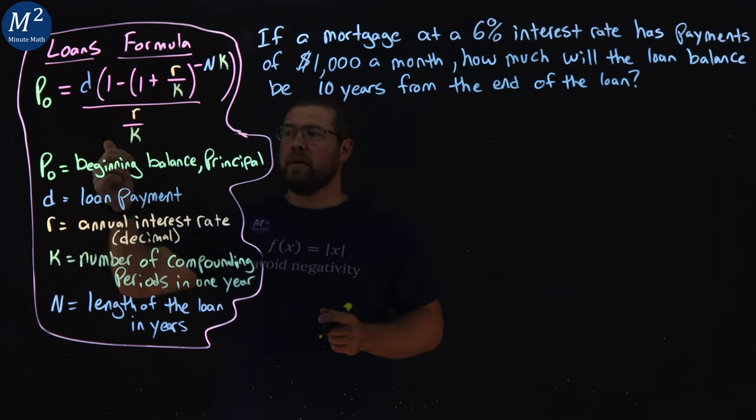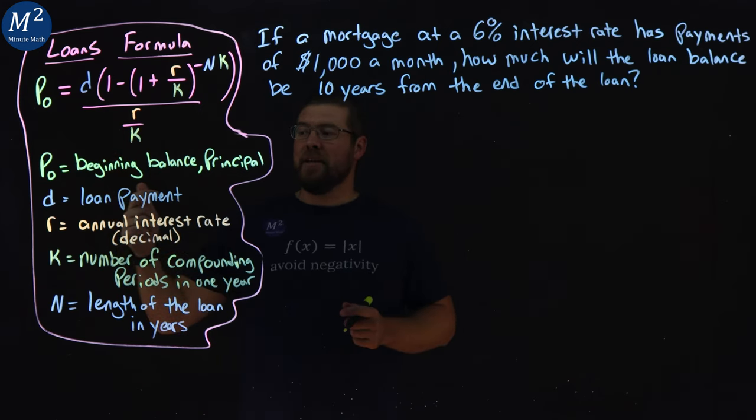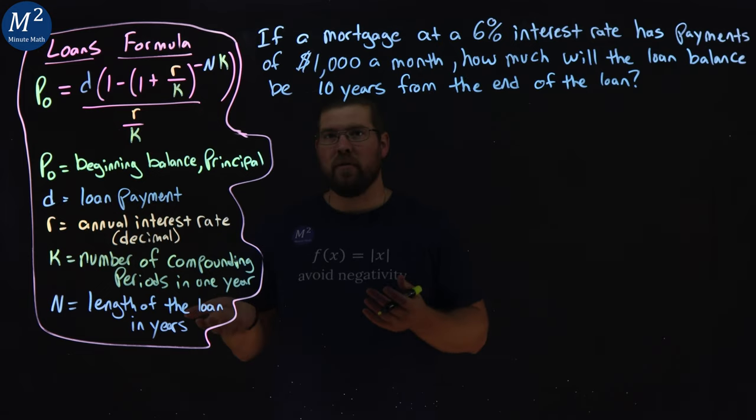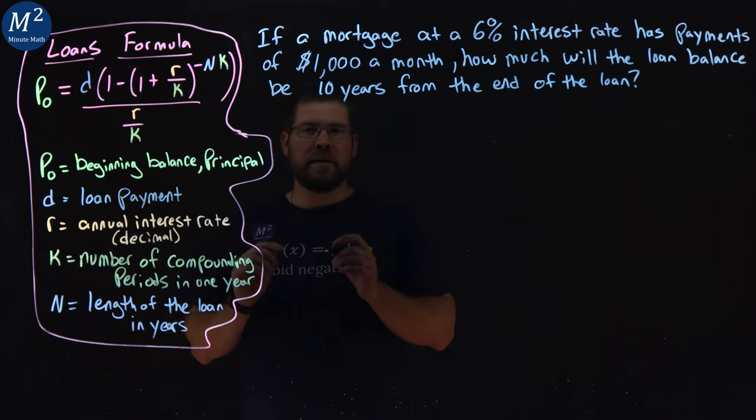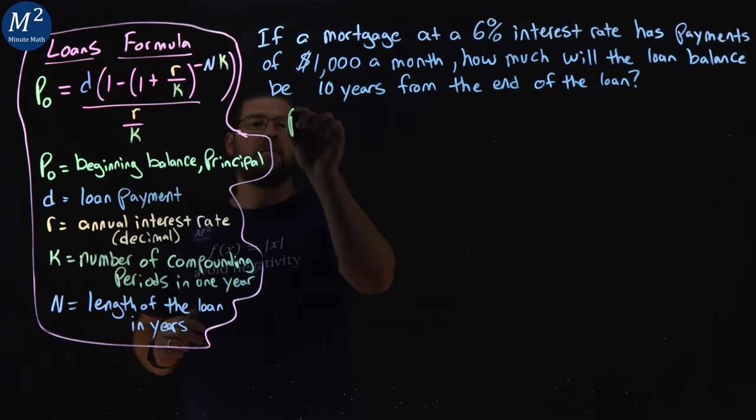We're going to be using our loans formula here, and we're going to identify each one of these values in our word problem and solve for the missing value. In this case here, it's a little tricky. We want to find the beginning balance, the principle.